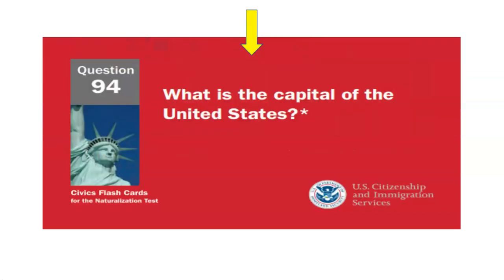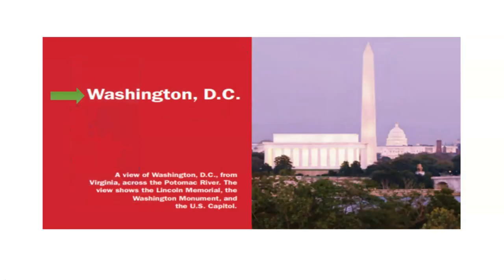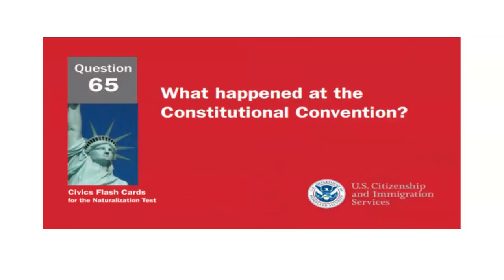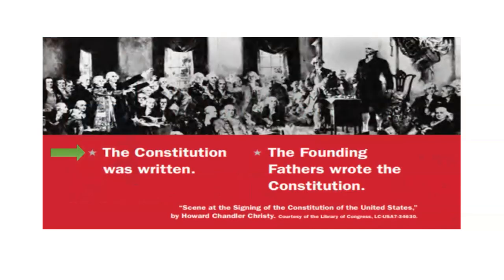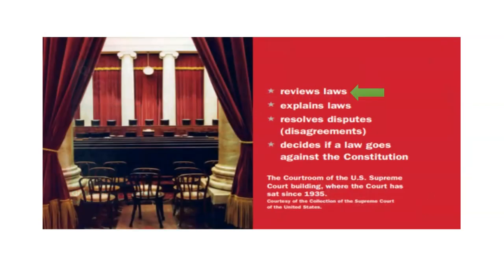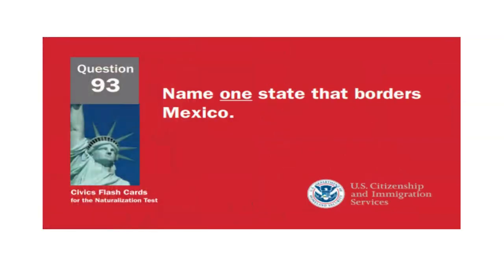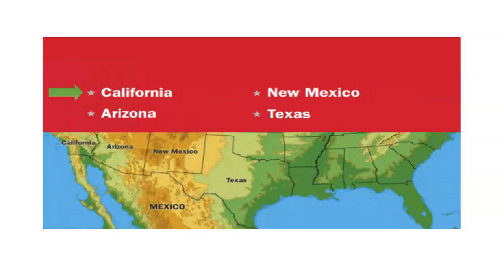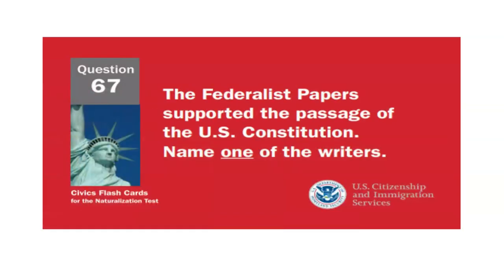What is the capital of the United States? Washington, D.C. What happened at the Constitutional Convention? The Constitution was written. What does the judicial branch do? Reviews laws. Name one state that borders Mexico. California.